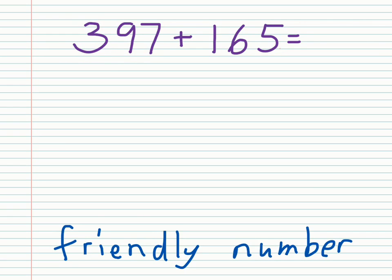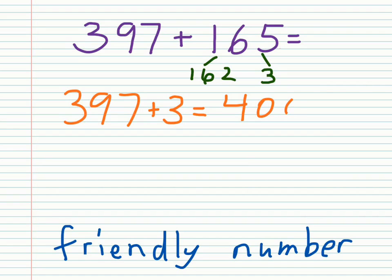I need 3 more to get there, so I'm going to break this into 3 and whatever's left, which is 162. So those two numbers together make 165. Now I'm going to add my 3 first, and the rest should be easy. Here's the first part, and this is how I get to the friendly number. Then I could break this into even smaller numbers or more parts, but I can do this much in my head. Just like before, the answer is going to be 562.